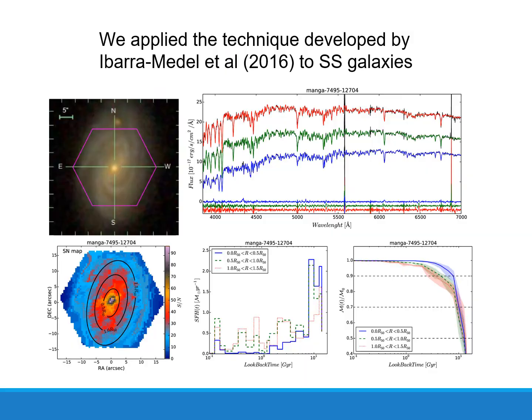We can analyze the history of star formation spatially, because we have information over the whole galaxy. We consider the inner part up to 0.5 effective radii, the intermediate part from 0.5 to 1 effective radius, and the outer part from 1 to 1.5 effective radii. We can then follow the evolution within these elliptical rings. This technique was developed by Ibarra-Medel.